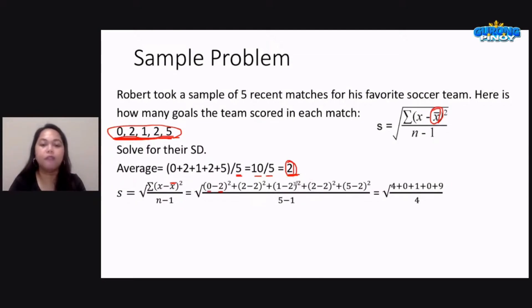Plus 2, the fourth score that we have, minus the average of 2, squared. Plus 5, the last score that we have, minus 2, the average, squared. All over n, 5 po, dahil meron tayong 5 na scores, minus 1, that's part of our formula.